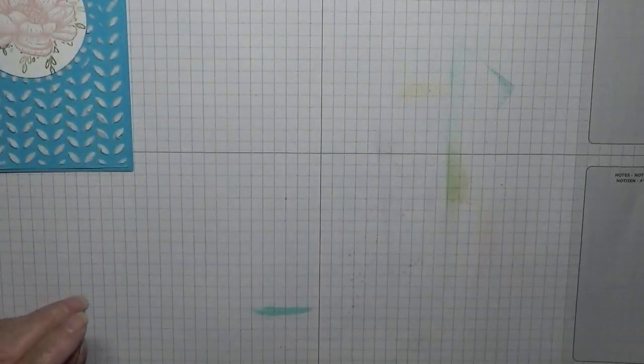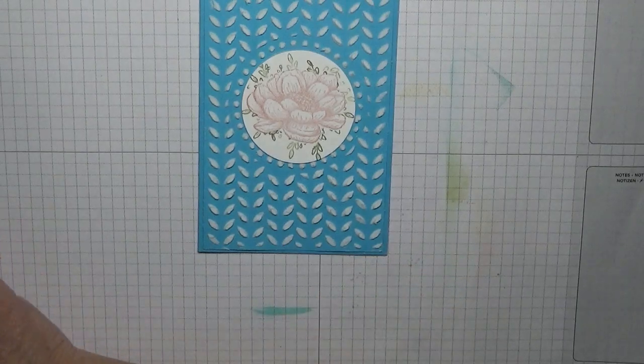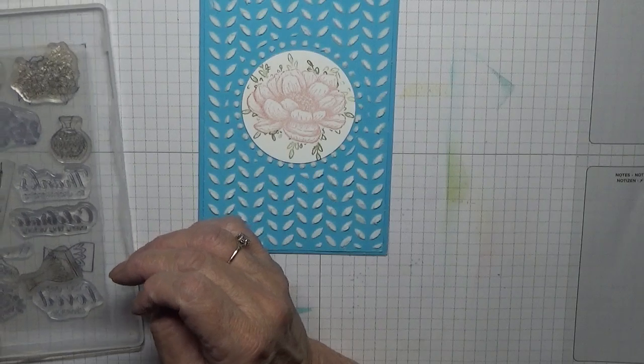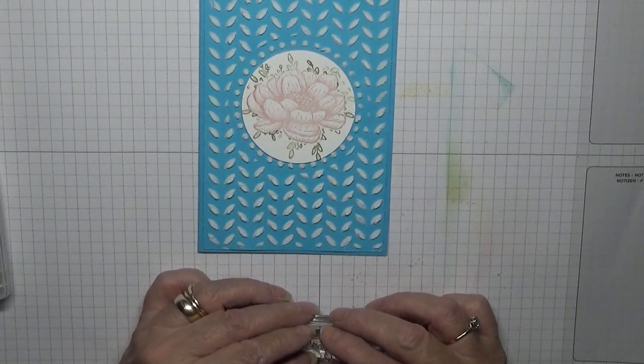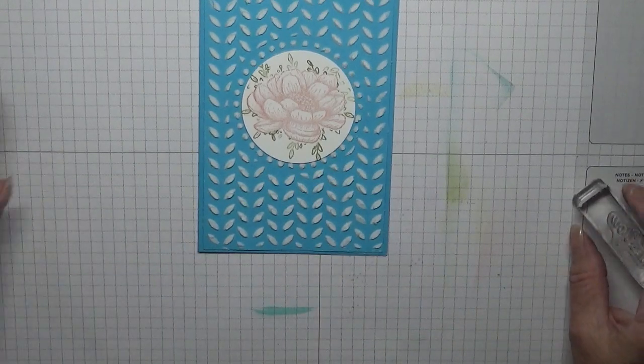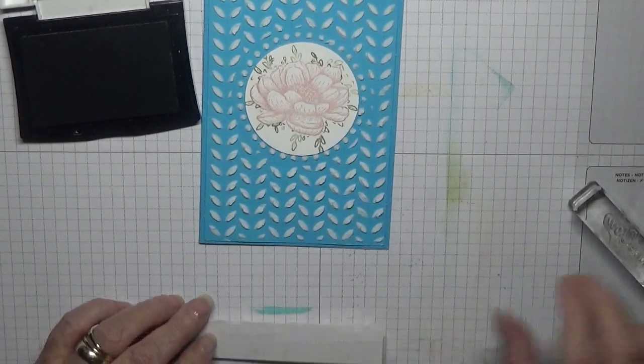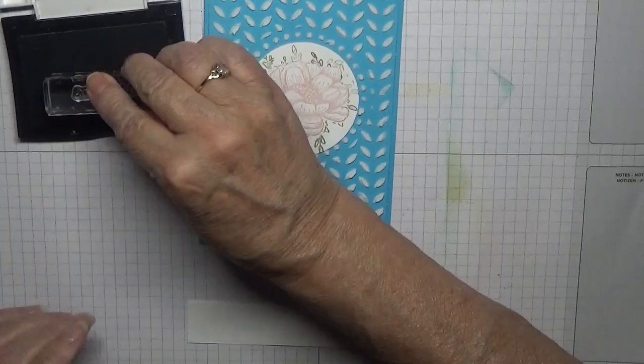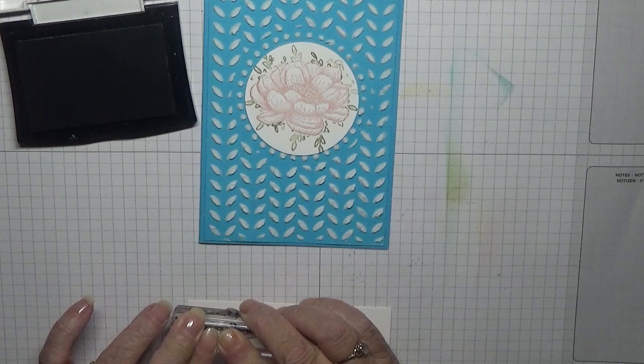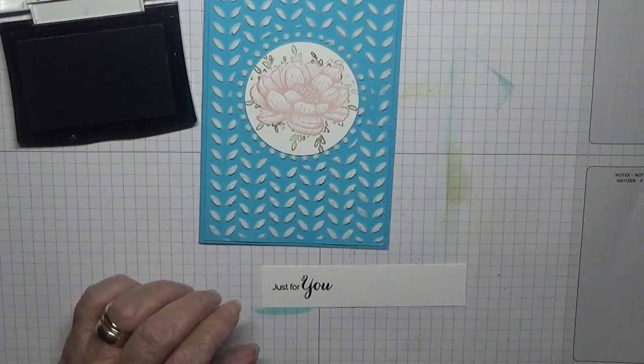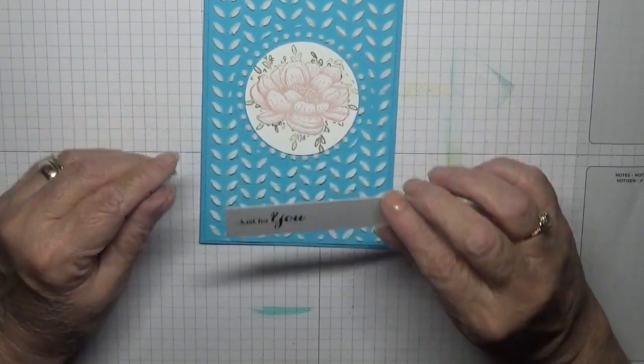And then for a sentiment I am going to be doing just for you. And this is out of the Varied Vases sentiment. I should be saying, what has she done? So, black ink. And stamp that. Like that. And I'm just going to place that there. But I'm going to cut it down.